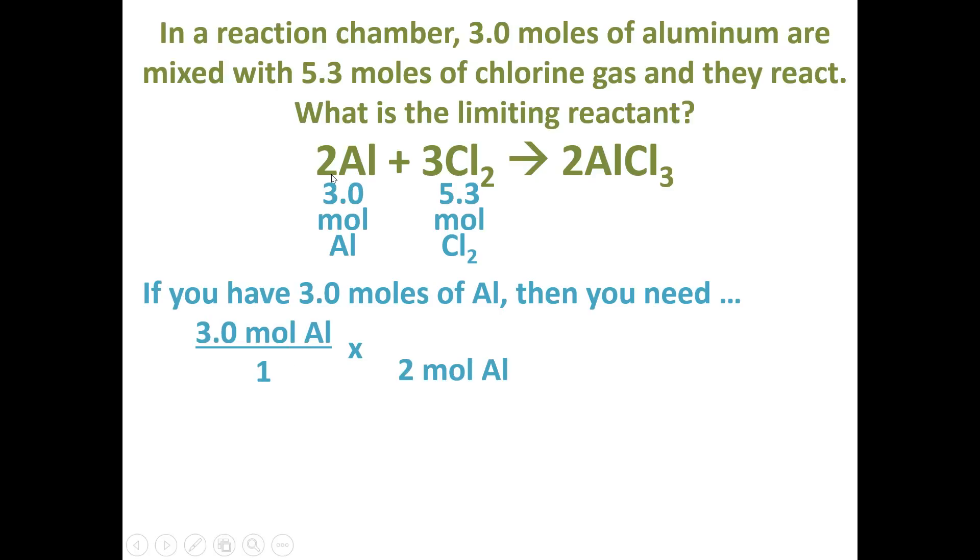The 2 came from the coefficient in the balanced chemical equation. And the 3 moles of chlorine are going to go on top. The 3 is the coefficient of the balanced chemical equation as well. Now we can go ahead and type this in our calculator as 3 times 3 divided by 2, and we get 4.5 moles of chlorine gas. What this number tells us is this is the number of moles we need if we had 3.0 moles of aluminum.